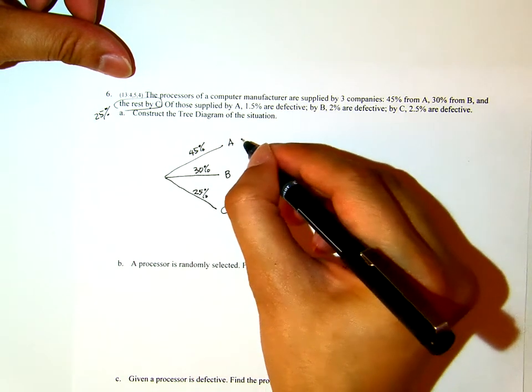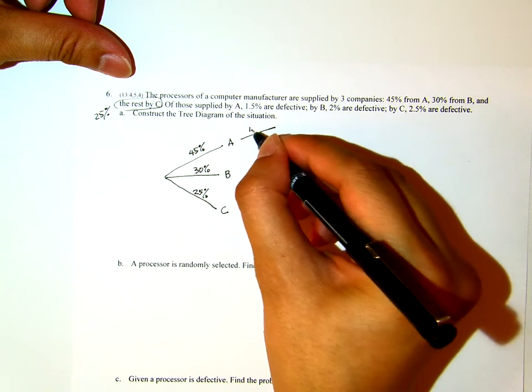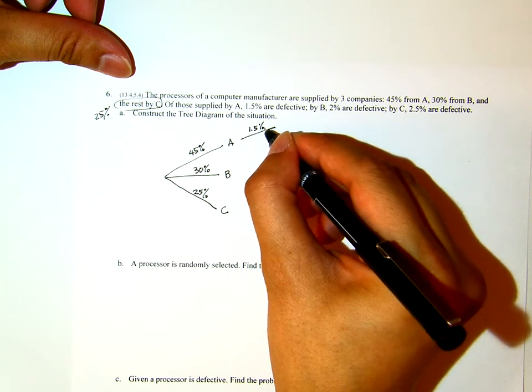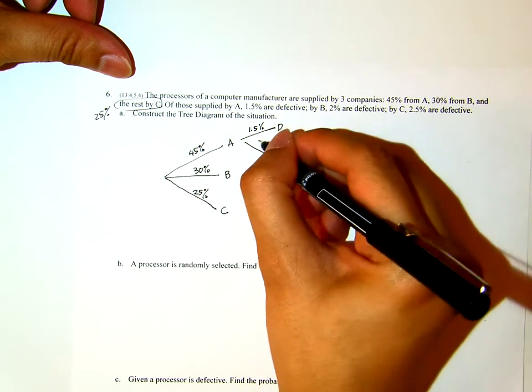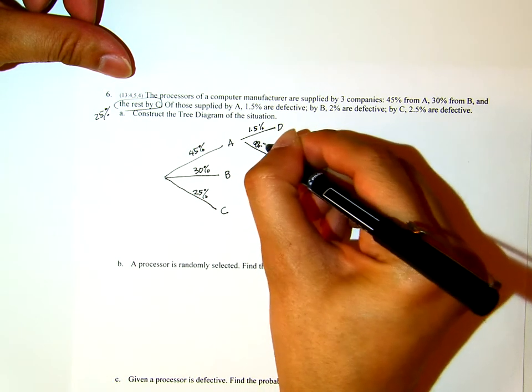Now, of those supplied by A, 1.5% of them are defective, which means the good one will be 98.5%. Let me use G for good.